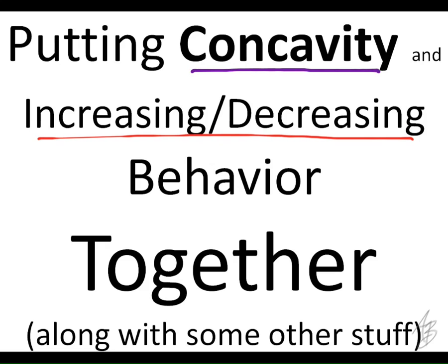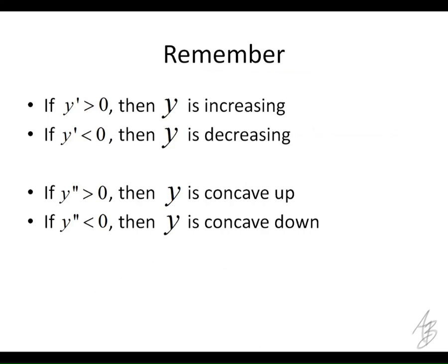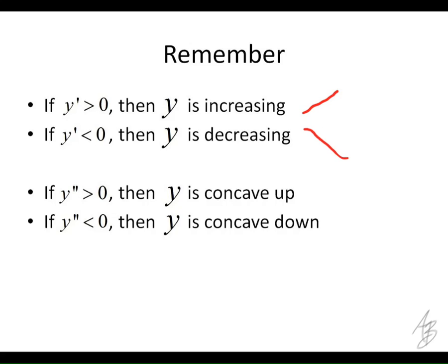What we're going to do now is put that together and look at what the two tell us at the same time. A positive first derivative tells us that the slope of the function is positive, and therefore the function is increasing — it might look something like this. A negative first derivative tells us that the slope is negative, and therefore the function is decreasing — it might look something like this.